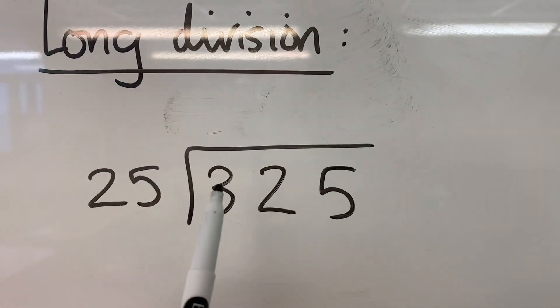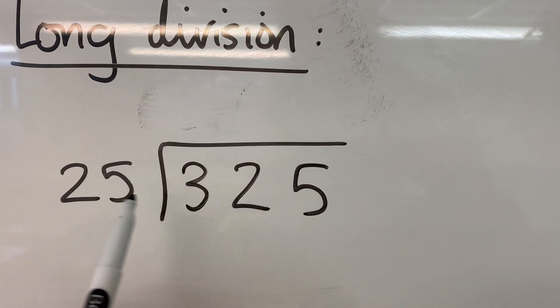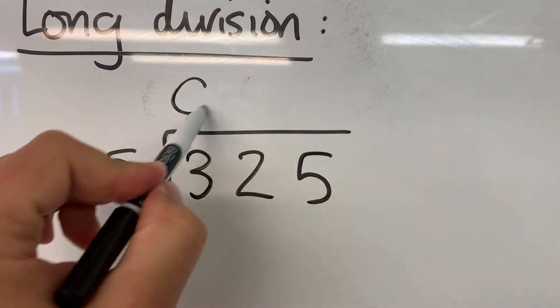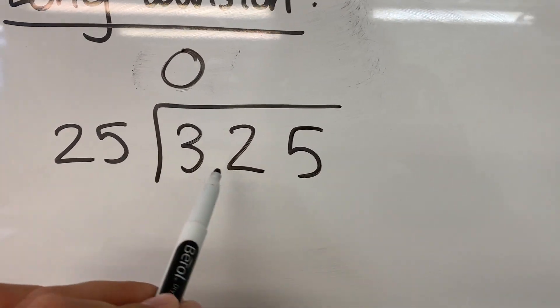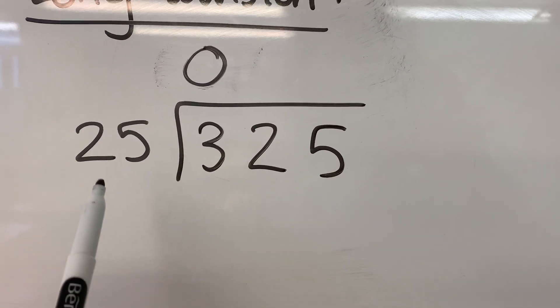We ask ourselves the same question, first of all. So how many 25s go into three? Well, none. How many 25s go into 32? You're going to need your 25 times tables for this one.